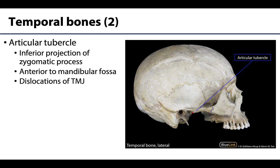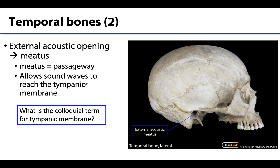Just anterior to the mandibular fossa is an inferior projection called the articular tubercle — not very palpable, but clinically important. When discussing the temporomandibular joint, if there's a dislocation, the condyle of the mandible — which typically sits in the mandibular fossa region — will move anterior to the articular tubercle and often lock in place. So this small projection carries significant clinical considerations we'll return to when we cover the joints.